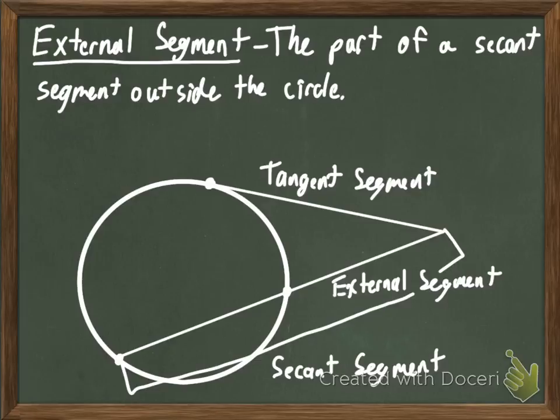An external segment is the part of a secant segment outside the circle. So, tangent segment. It's a segment that starts outside the chord that is tangent to a circle.